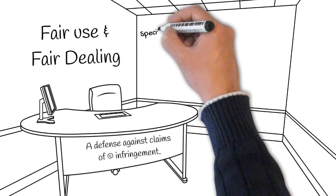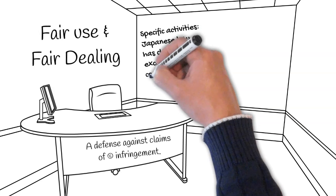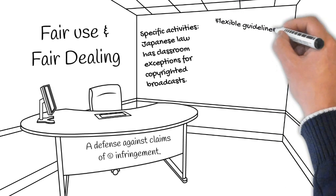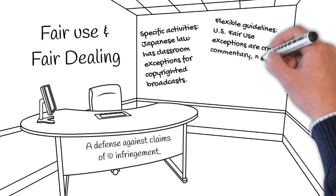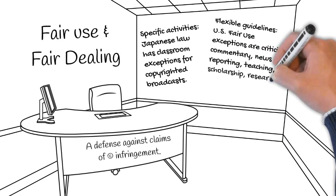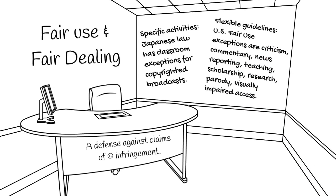The two main ways countries have dealt with limitations or exceptions to copyright are: first, by listing specific activities exempted from copyright protections — for instance, Japan has an exemption that allows classrooms to broadcast copyrighted materials — and second, by using flexible guidelines and letting courts determine which uses are considered fair use. In the United States, fair use is determined by a four-factor test in which federal court judges consider: 1) the purpose and character of the use; 2) the nature of the copyrighted work; 3) the amount and how substantially the work was used; and 4) the effect of the use upon potential marketability for the copyrighted work.